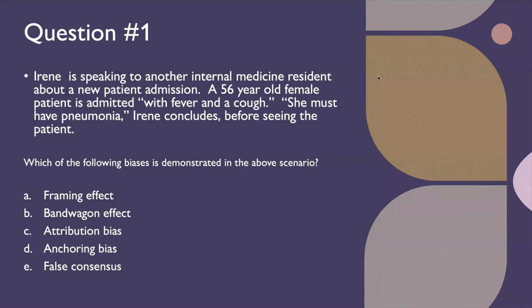Question number one: Irene, an internal medicine resident, is speaking to another internal medicine resident about a new patient admission. She identifies a 56-year-old female patient admitted with fever and a cough. Irene concludes she must have pneumonia, even before she sees the patient. Which of the following biases is demonstrated in this scenario? Is it the framing effect, the bandwagon effect, attribution bias, anchoring bias, or false consensus?